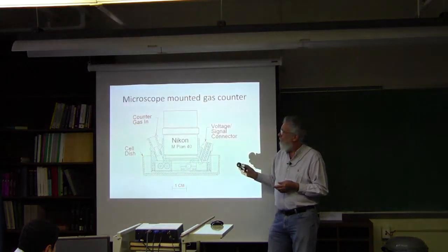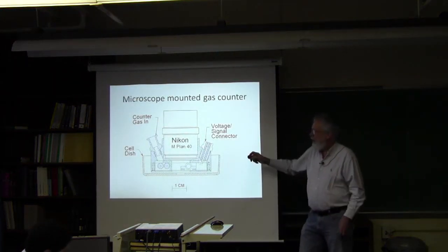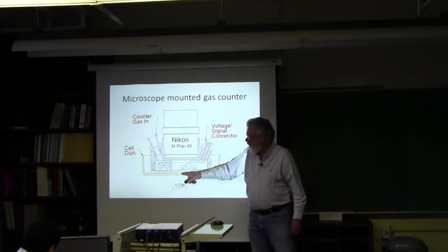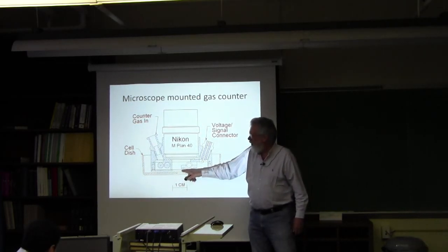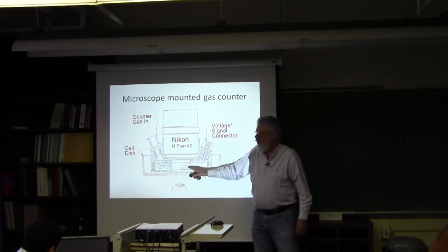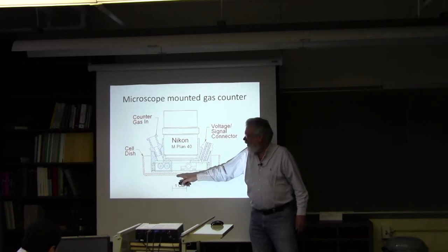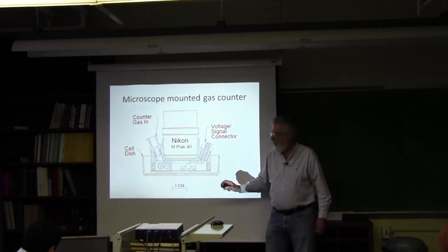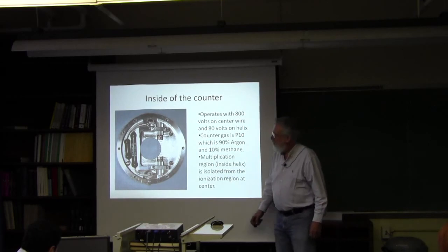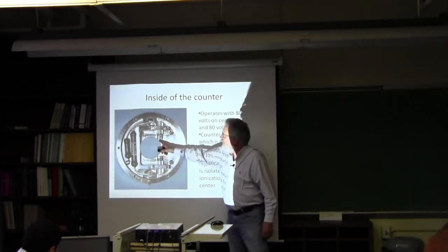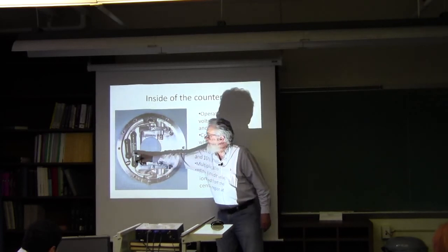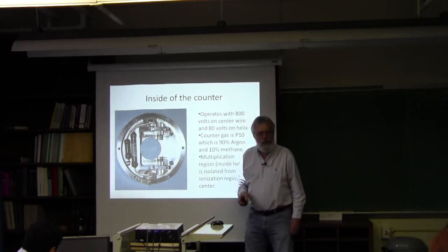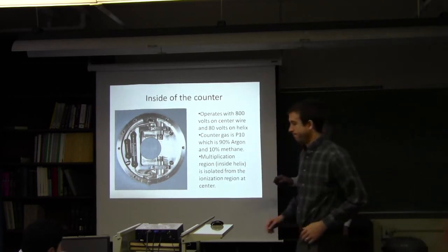Here's the microscope final objective with the gas counter mounted to it. Here's the dish. There's a small space between where the cells are and the entrance to the detector. This is the helix that is the actual detector itself and the center wire. The ions are produced in this region and they drift over, collected by the helix, and then multiply on the center wire. Here's the helix and the center wire of that counter. These two resistors are for setting up the ratio of the fields on the center wire and the helix and allows us to use only a single connection to the counter. We use P10 gas in that.